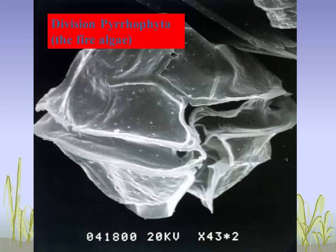The main dinoflagellate — Gonyaulax, Protogonyaulax, or Alexandrium — is called armored algae because very often, especially the toxin-producing ones, have an armored plate around them called thecal plates. These individual plates, like an armored knight's suit, are important because that's how identification is done: the numbering, positioning, location, and shape of those plates determines the species. They are also motile via flagella in the sulcus groove.